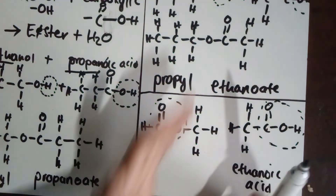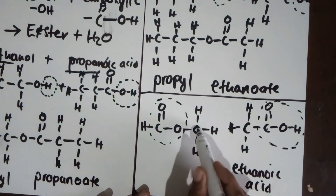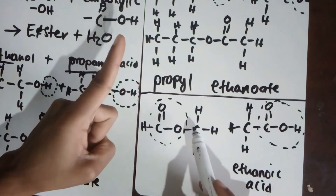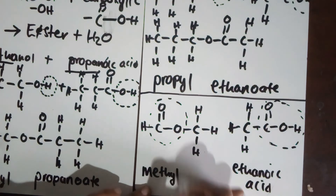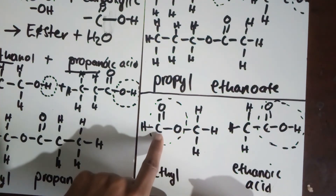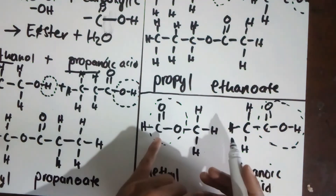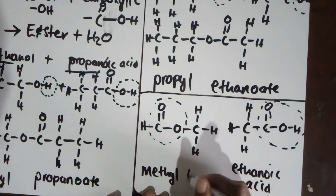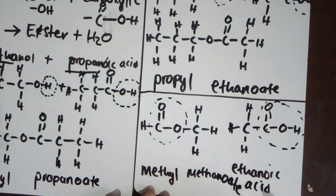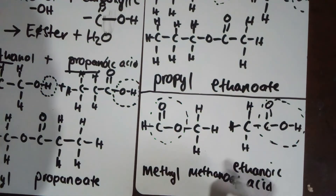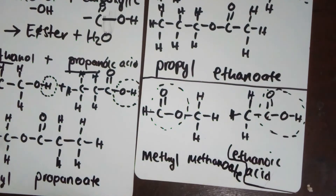The part of the ester that doesn't have the double bond comes from an alcohol — in this case methanol, which only has one carbon — so it becomes 'methyl.' The carboxylic acid involved in making this ester also had one carbon, so it becomes 'methanoate.' Therefore this ester is called methyl methanoate.